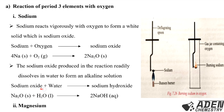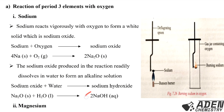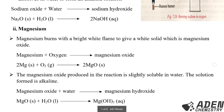Sodium oxide plus water gives us sodium hydroxide. When a metal is reacted with oxygen, we get a metal oxide; when that metal oxide is dissolved in water, we form a metal hydroxide. So sodium oxide (solid) plus water (liquid) gives us two moles of sodium hydroxide.